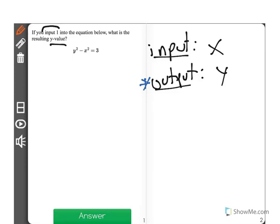all you have to do is put that in for the x value. So here it says, if you input 1 into the equation below, what's the resulting y value? So we're going to input 1 for x, and see what we get as our y value.